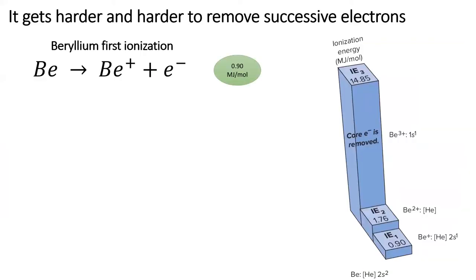Removing an electron from a neutral atom requires pulling a negative charge away from a positive charge, which always takes energy to accomplish. In this atom of beryllium, it takes 0.9 megajoules of energy to ionize one mole of beryllium atoms.